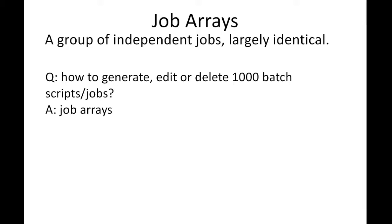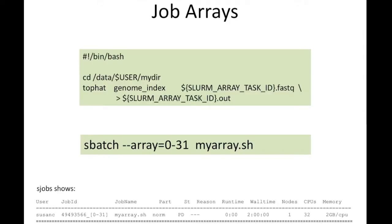Job arrays are intended for a group of independent jobs that are largely identical. For a job array, you write only one batch script. It starts with the pound-bang bin-bash, meaning it's a bash script, CDs to some directory, and then runs an application called TopHat. The inputs for TopHat would normally be a FASTQ file and it would write to some output file. But here, instead of the name of the input file, it's replaced by $SLURM_ARRAY_TASK_ID.fastq, and the output file is similarly replaced by $SLURM_ARRAY_TASK_ID.out.